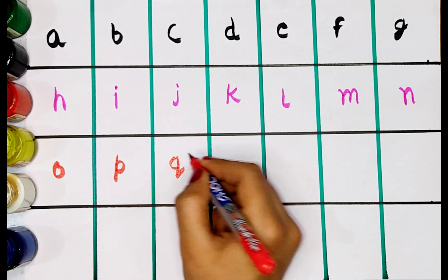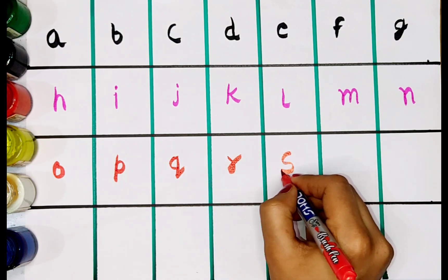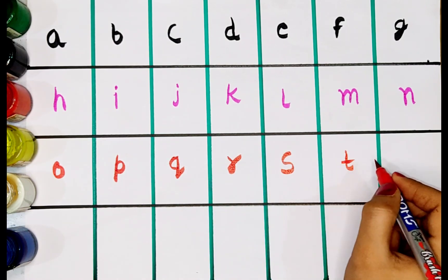Q. Q for queen. R. R for rabbit. S. S for sunflower. T. T for trumpet.